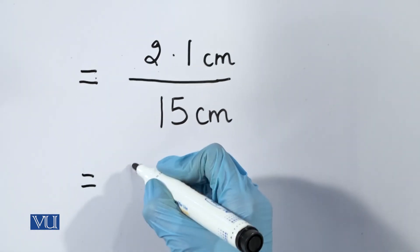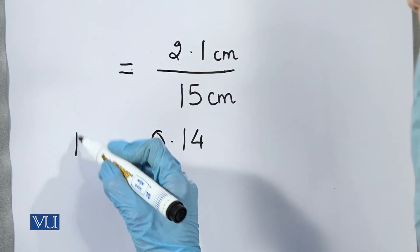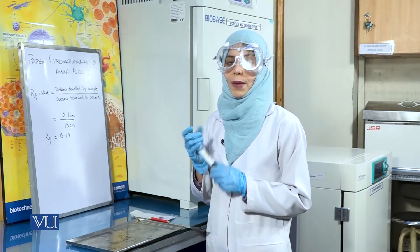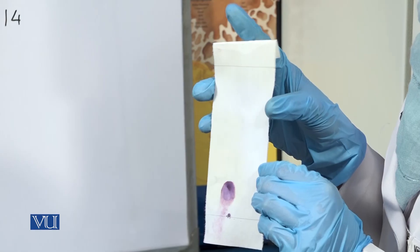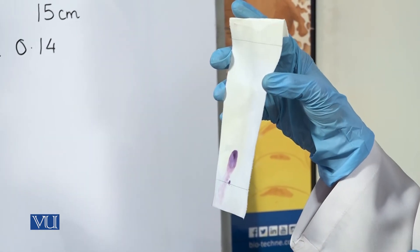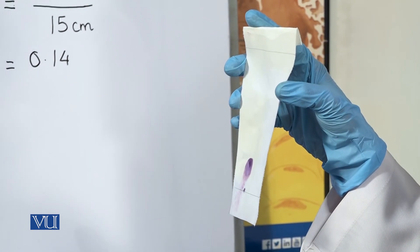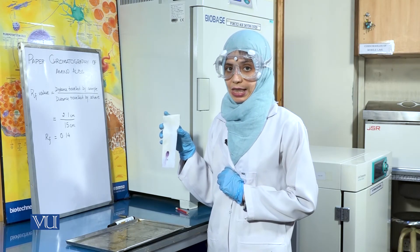Hence, the RF value comes out to be 0.14, which is the RF value for the amino acid lysine. Therefore, we can identify that our sample contains the amino acid lysine. Paper chromatography is a valuable tool for the identification of amino acids. Each amino acid has a different RF value based upon the presence of the R group in that amino acid. Therefore, using RF values, we can identify which amino acids are present in the solution.